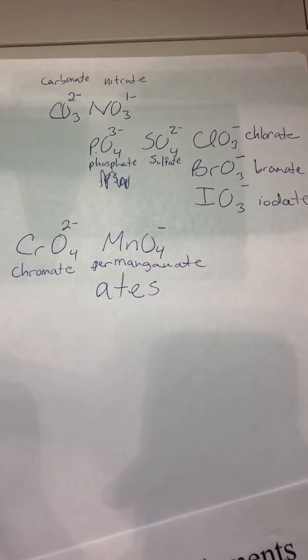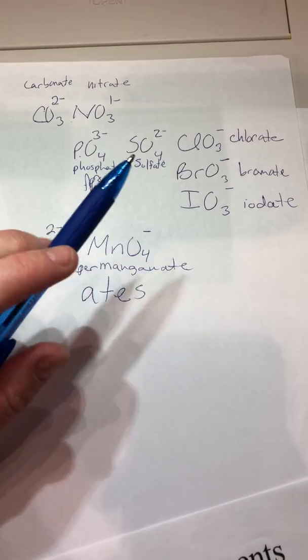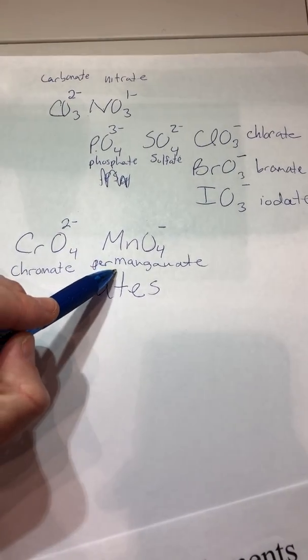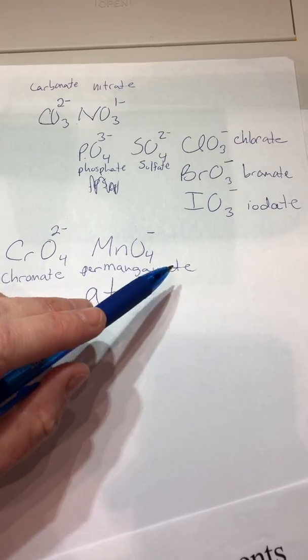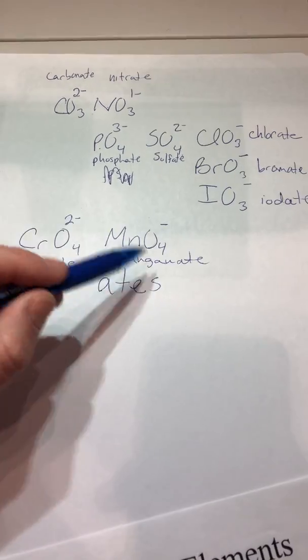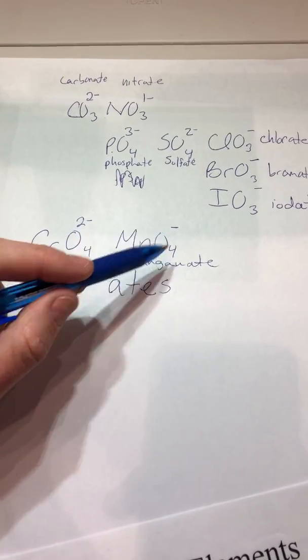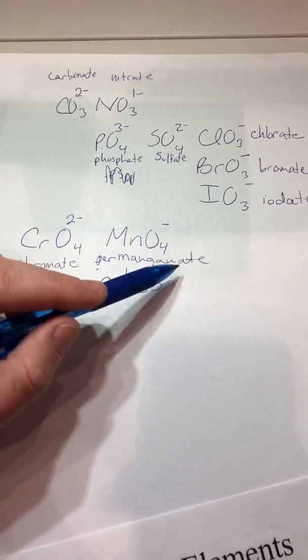So carbonate, nitrate, phosphate, sulfate, chlorate, bromate, iodate, chromate, and permanganate. Permanganate isn't something you come across too often. This is the most common one. And that's why we're going to go ahead and memorize it right now.